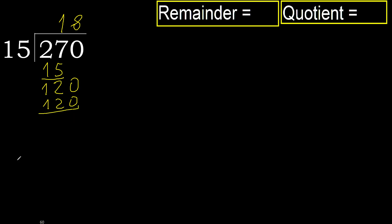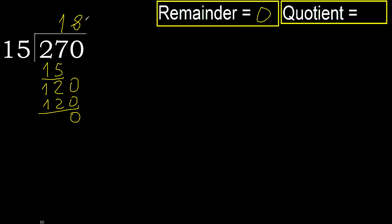Subtract. 0. Next. There is no number, therefore finish it. Ok, 270 divided by 15 is 18.